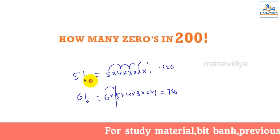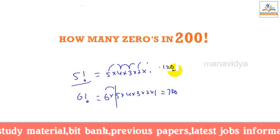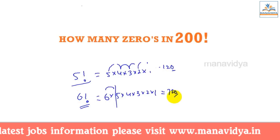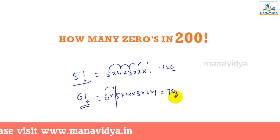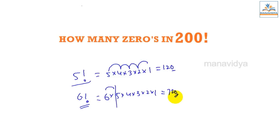For example, if you think about 5 factorial, the answer has 1 zero. If you think about 6 factorial, the answer has 1 zero. If you think about 7 factorial or 8 factorial up to 9, their answer will have 1 zero.